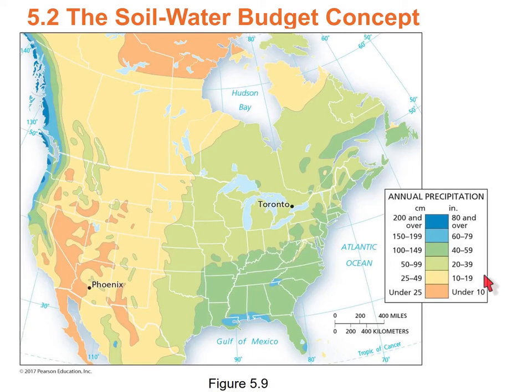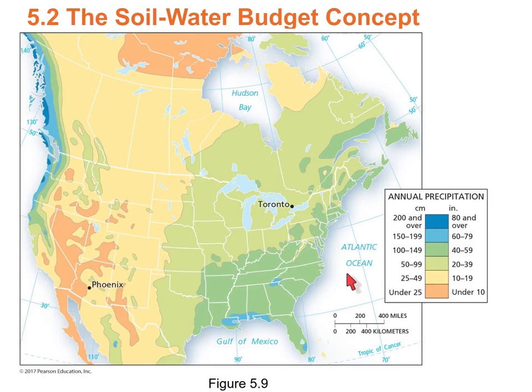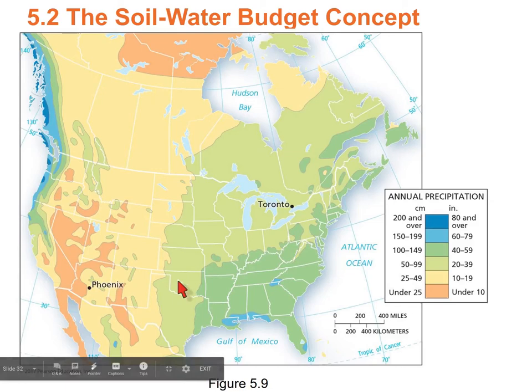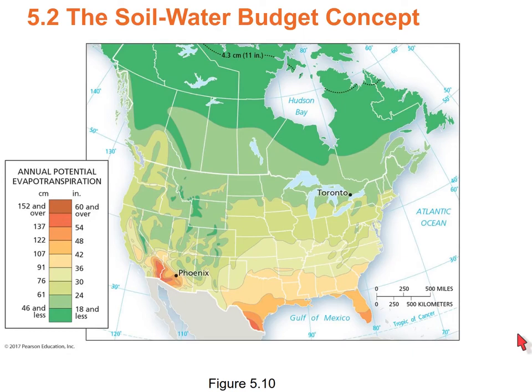This map shows annual precipitation for most of North America. In the southeast, the Gulf of Mexico and warm Atlantic create maritime tropical air masses, so the east coast gets rain year-round and a lot of it, extending up into Maine. In the southwest, the subtropical high makes it drier. Going north on the west coast, you hit the polar front, so precip increases toward Canada and decreases toward Mexico. The Pacific Northwest and American Southeast have some of the highest rainfall values.